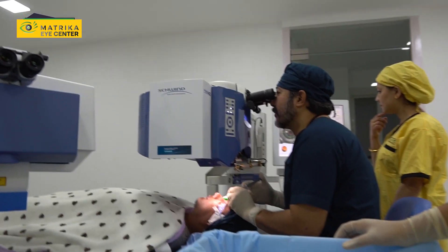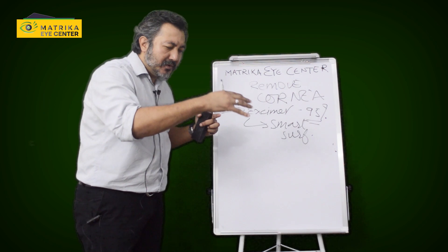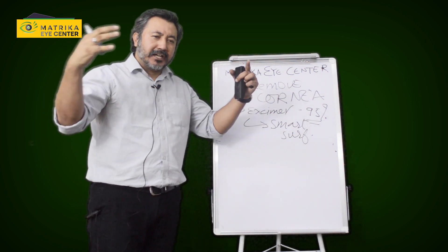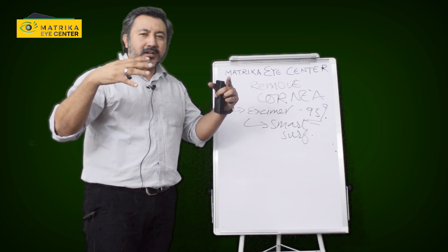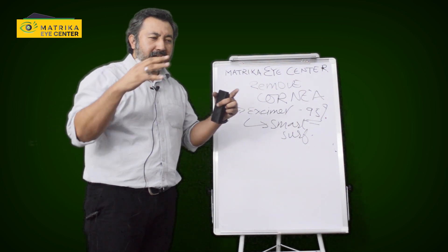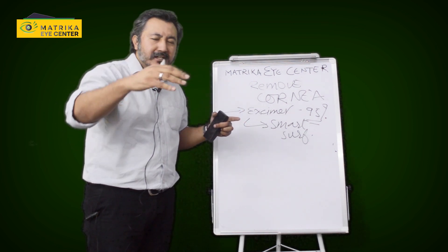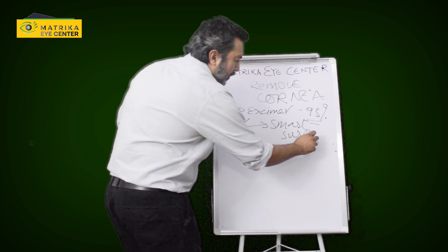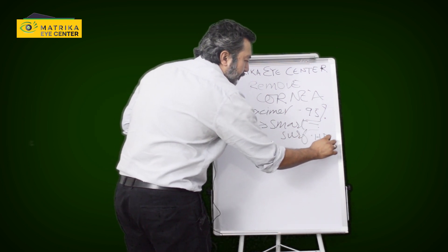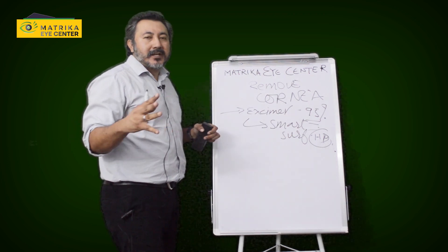So SmartSurf, it is the best procedure so far. It makes the cornea smooth. It treats you according to your cornea topography. It treats you exactly what your cornea looks like. So it's basically more topography-guided. It treats your power, it smoothens up, and your vision is super duper. HD vision. This is the best thing that we can have.